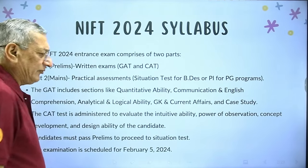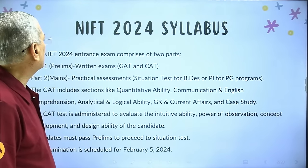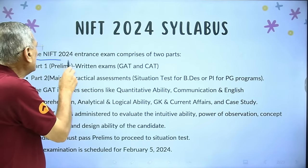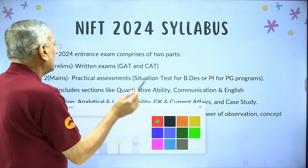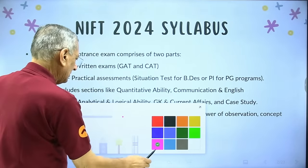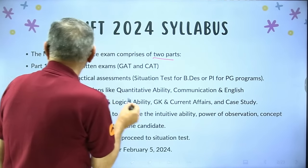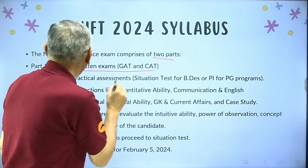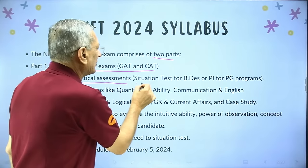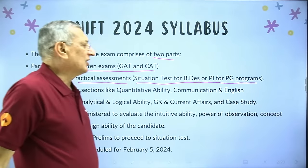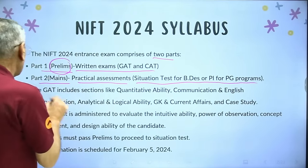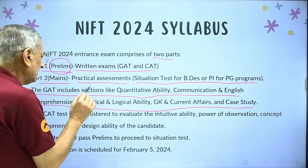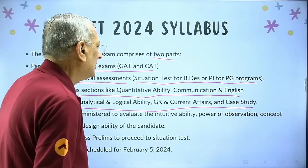Before going ahead with the Creative Ability Test questions, let me remind you that the NIFT 2024 syllabus comprises two parts. Part 1 is the written exam — GAT and CAT. Part 2 is a practical assessment: situation test for B.Des or personal interview for PG students. The GAT includes Quantitative Ability, Communication and English, English Comprehension, Analytical and Logical Ability, GK and Current Affairs, and Case Study.